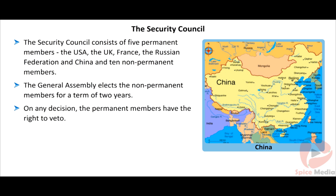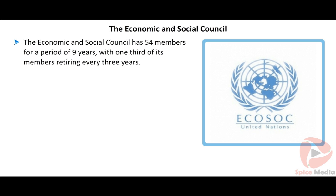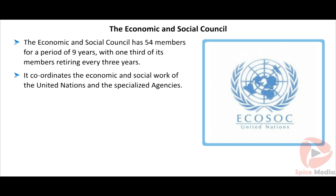On any decision, the permanent members have the right to veto. A veto is a negative vote. The Security Council's foremost concern is to maintain international peace and security. The Economic and Social Council has 54 members for a period of nine years, with one third of its members retiring every three years.